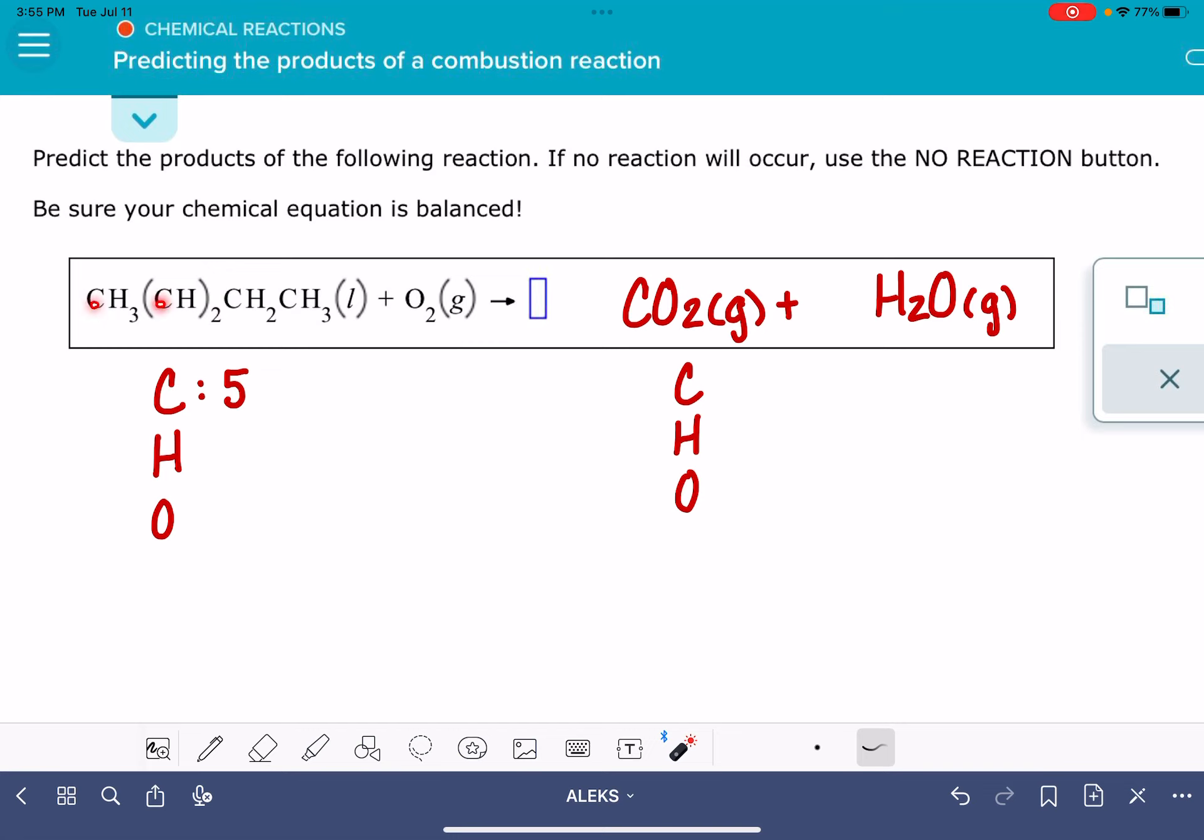So I have 5 carbons, I have 10 hydrogens, and I have just the 2 oxygen from O2. On the right-hand side,